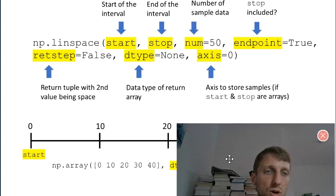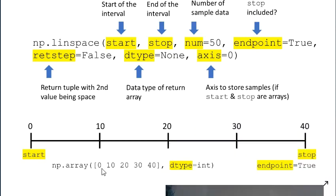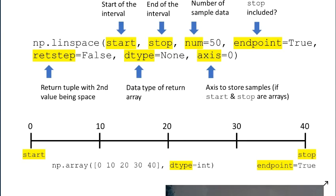Linspace is used very frequently to create numpy arrays. You call it with start and stop arguments; the remaining arguments are optional. Say you set start to zero and stop to 40 — by default the endpoint is included, so 40 is included. Then you define the number of sample data points with the num argument, for example five.